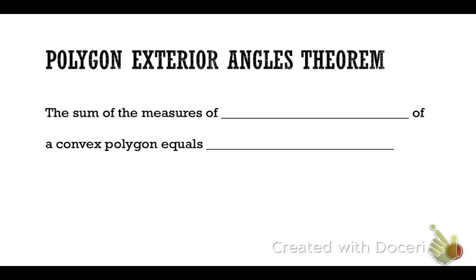We have a theorem called the polygon exterior angles theorem that says the sum of the measures of all exterior angles, so if I add up all the exterior angles, one at each vertex of a convex polygon, that has to equal 360 degrees, no matter how big or how small my polygon is.